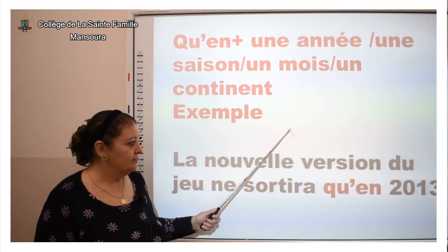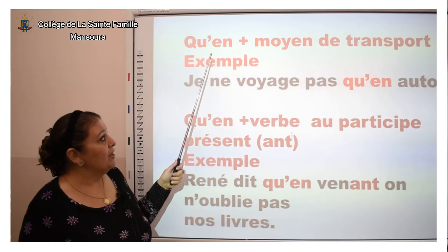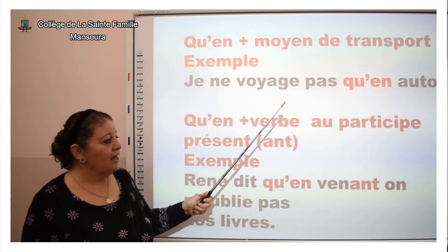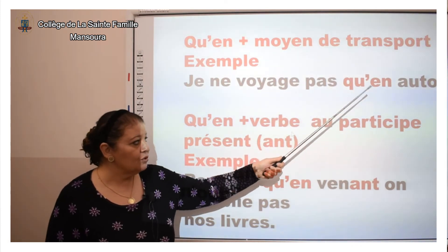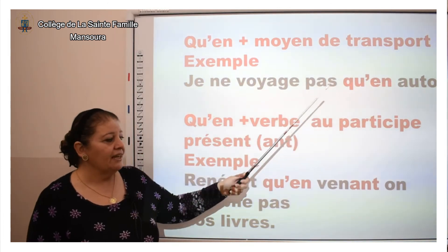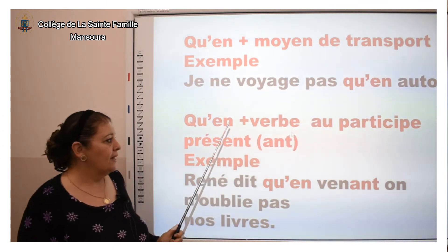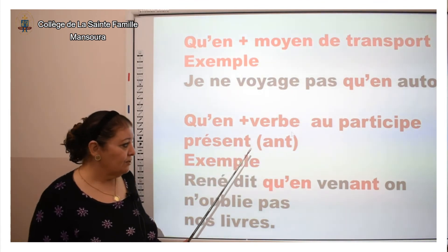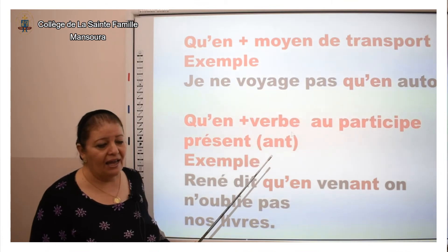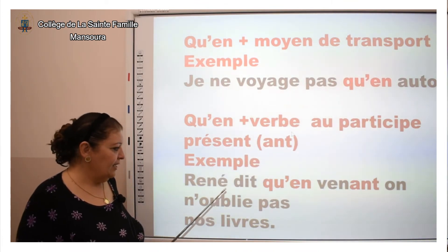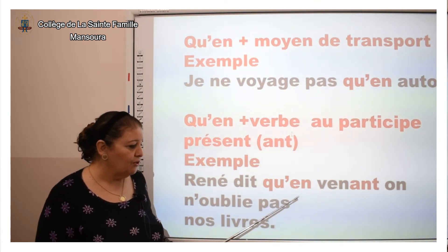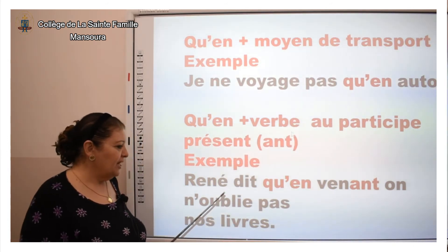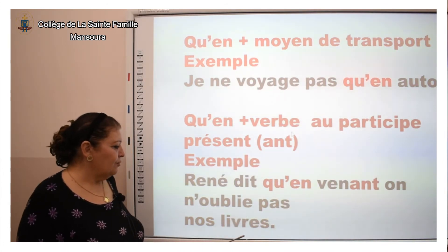En 2013. On peut aussi mettre « qu'en » en deux mots devant les moyens de transport. Exemple : « Je ne voyage qu'en auto » — en auto, en autobus, en train — tout ça, on met « qu'en » en deux mots. Également, « qu'en » plus un verbe au participe présent, c'est-à-dire un verbe qui se termine par -ANT. Exemple : « René dit qu'en convenant. » On a mis « qu'en » en deux mots parce qu'il y a un verbe qui se termine par -ANT.